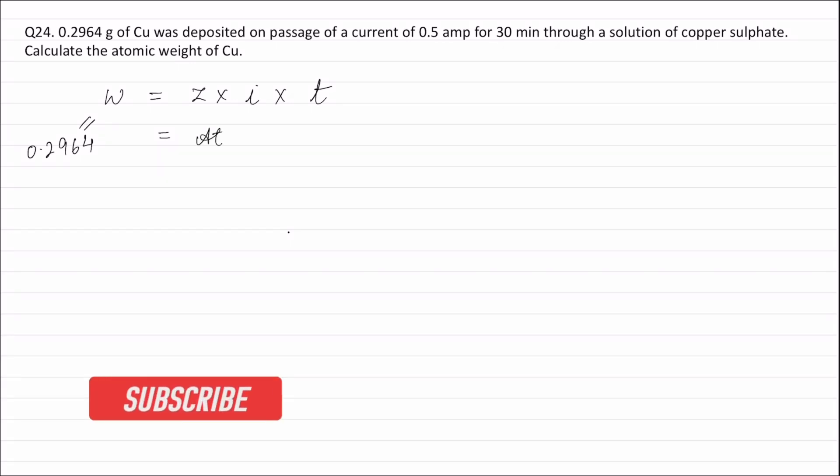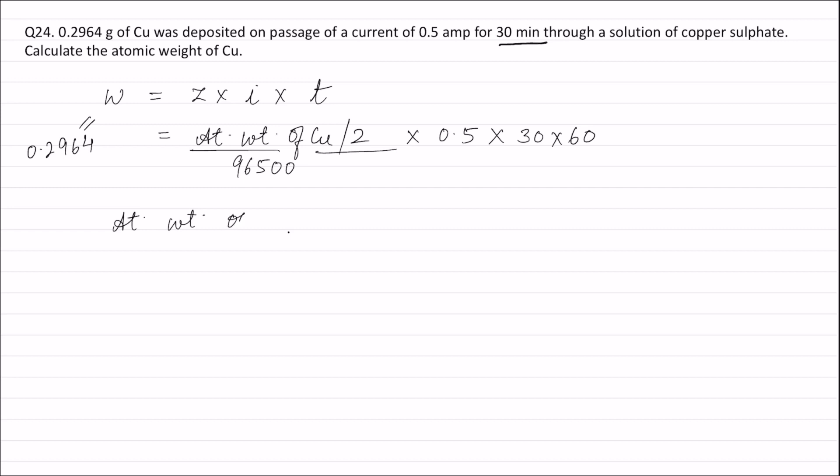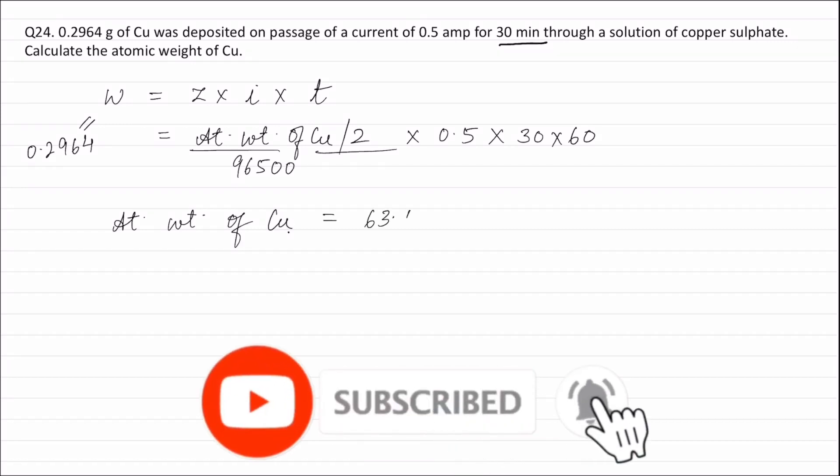The value of Z will be atomic weight of copper divided by valency factor, that is 2, divided by 96500 coulombs, into current which is given as 0.5 ampere, into time which is given as 30 minutes or 30 × 60 seconds. Solving this, atomic weight of copper is equal to 63.56.